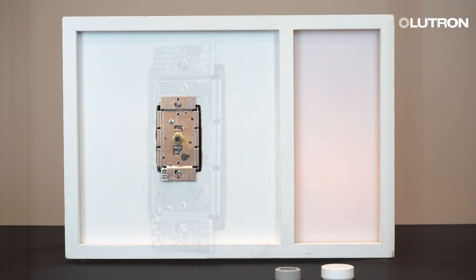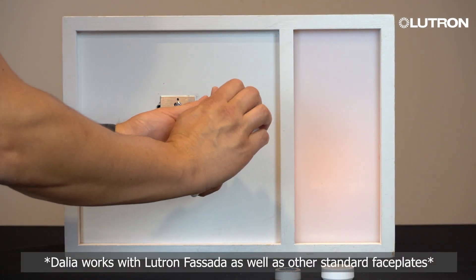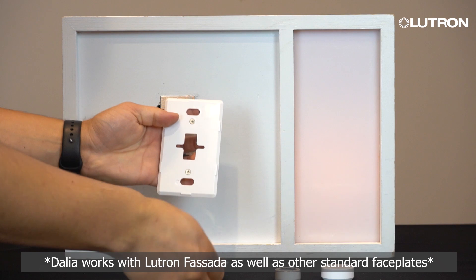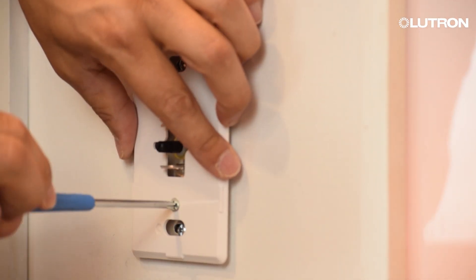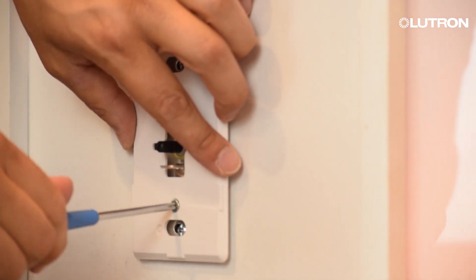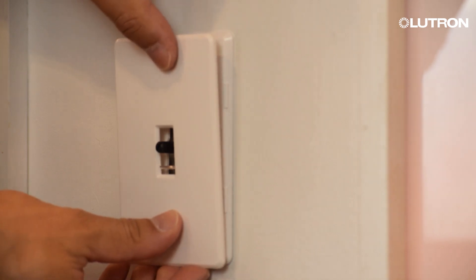Now that you have adjusted the low-end trim of the dimmer, you can attach the Lutron Fasada faceplate. Remove the front of the faceplate to reveal the screws for mounting. Attach the faceplate to the dimmer using the provided screws, and then snap the front back on by pressing around the edges.